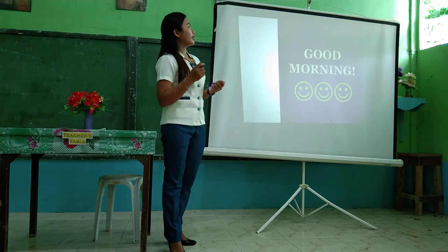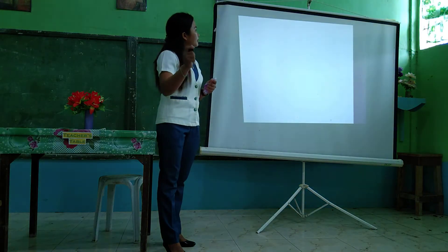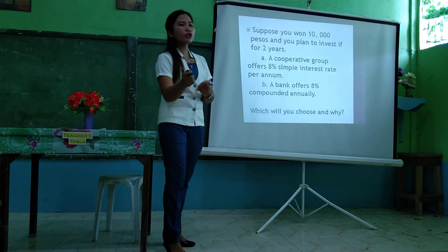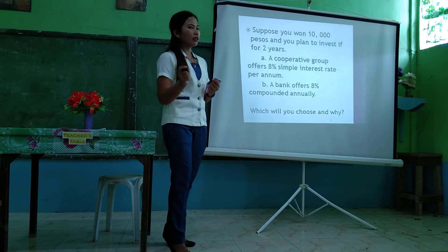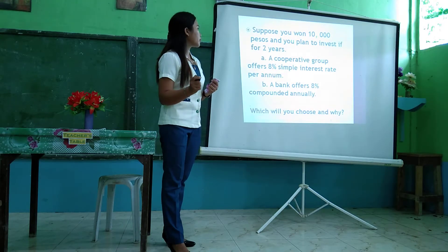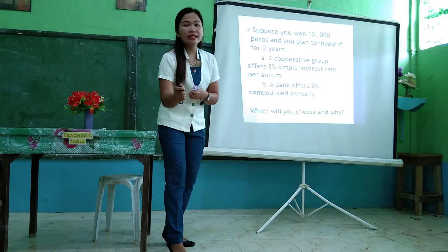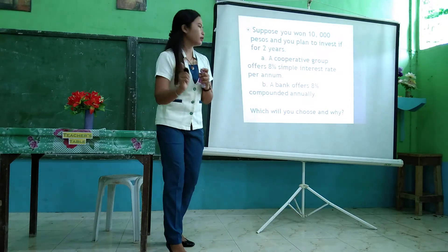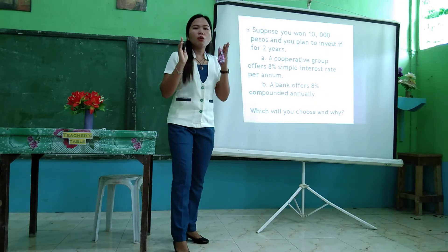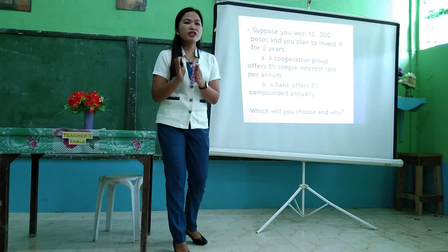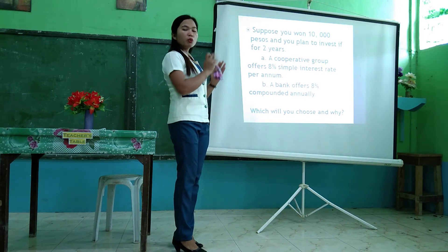Before we go on with our topic this morning, I have prepared a situation for you. Suppose you won 10,000 pesos and you plan to invest it for two years. Option A: a cooperative group offers 8% simple interest rate per year. Option B: a bank offers 8% compounded annually. The question is: which will you choose and why? We will reserve that question and answer it at the end of the topic.